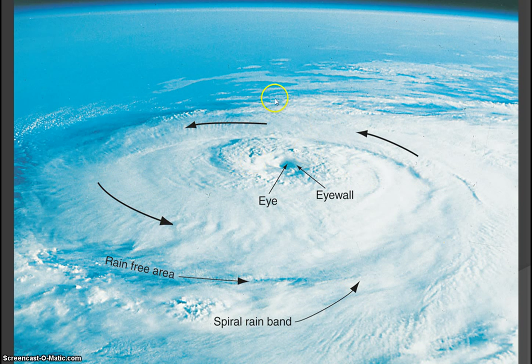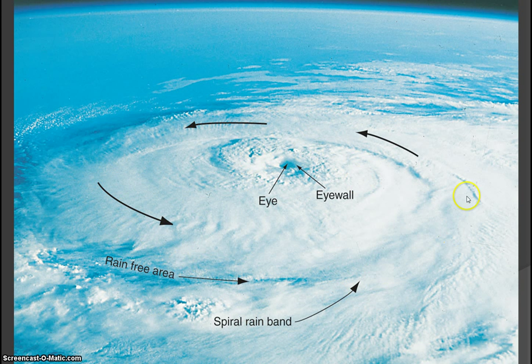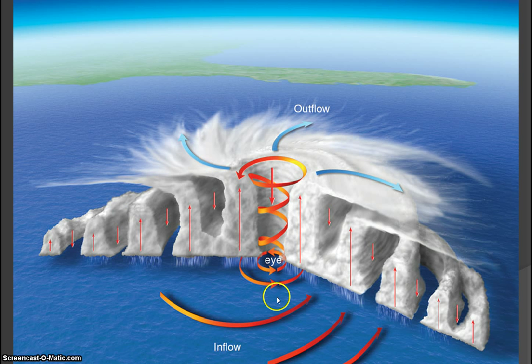These spiral bands rotate counterclockwise in the northern hemisphere. The eye of the storm is in the middle, surrounded by the eye wall, with rain areas and thunderstorms in between the bands. In the cross-sectional diagram, we have the eye wall with rising air except right in the center, where you get sinking air — that's why you have a clear band in the middle. The outflow aloft is actually anti-cyclonic, rotating the opposite way.